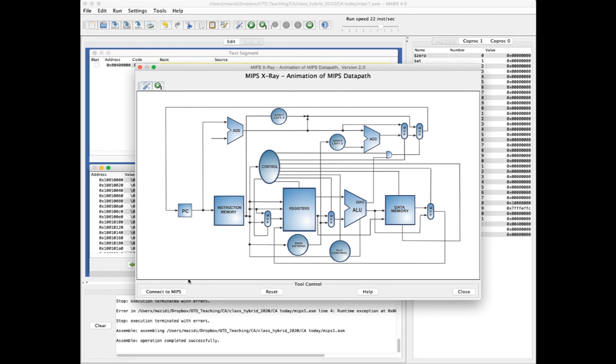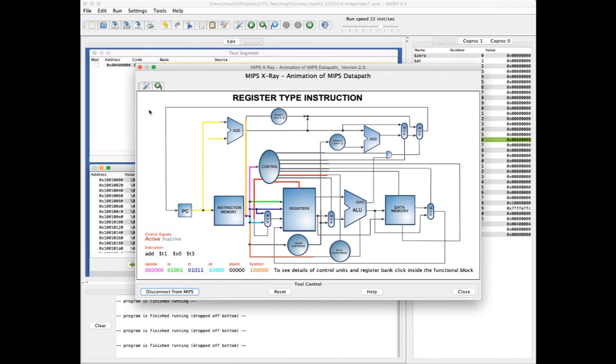I hit Connect to MIPS, and now I can single-step through that ADD instruction. Notice that the parts of the decoded instruction are color-coded.